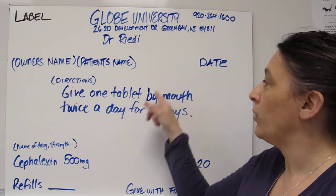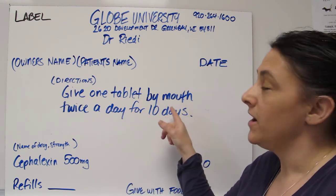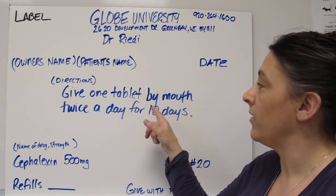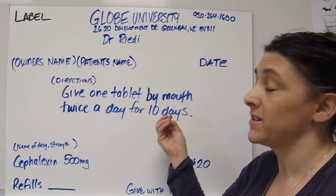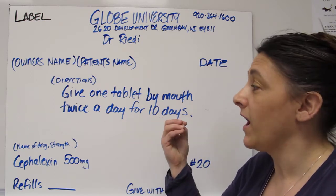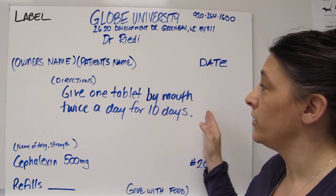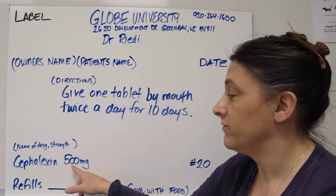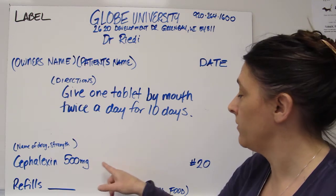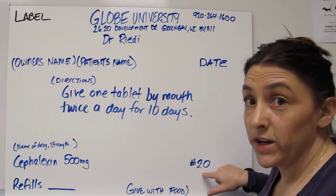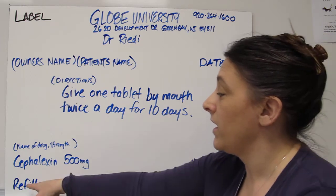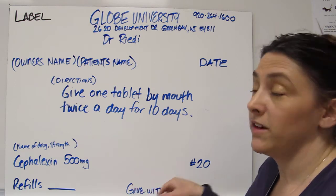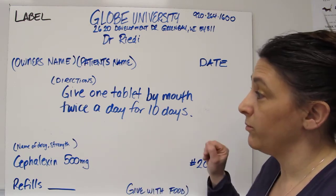You need to make sure you include how they're going to give it, especially if it's medication that can be given different ways. Drops may accidentally go in the ear instead of in the eye. So it's very important you write that on there. So the name of the drug, Cephalexin, 500 milligrams, which is the strength, how many we're giving out, so there's 20 tablets in that bottle, how many refills that are on there, and then you may have something like give with food or keep refrigerated.